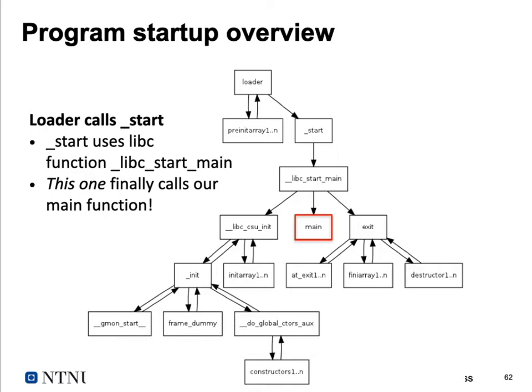Here is a diagram of Linux program startup. The loader calls a _start function, which calls libc_start_main. libc_start_main calls a number of init functions — libc_csu_init and additional functions — and finally calls our main function. When main exits, even calling exit involves cleanup: exit runs a number of cleanup routines, and we can specify at-exit functions for additional cleanup. There are also destructors to remove data elements from memory. So there is a lot happening before the first instruction in main is actually executed.